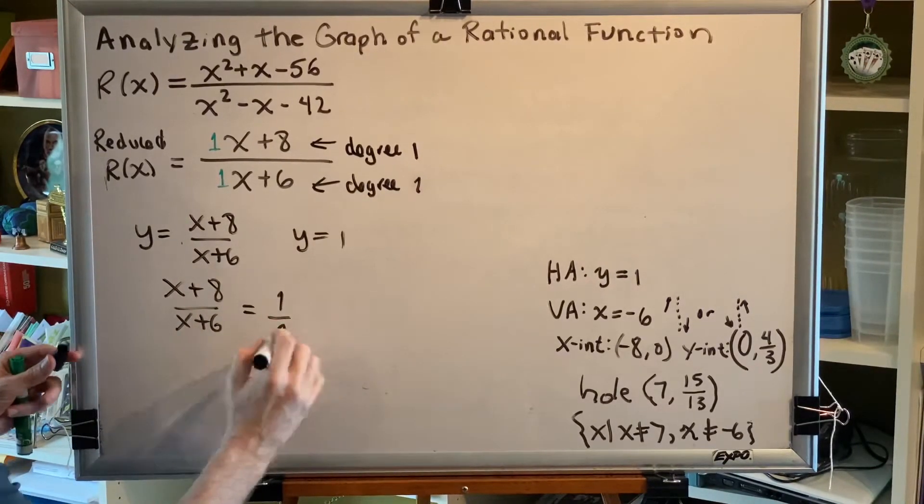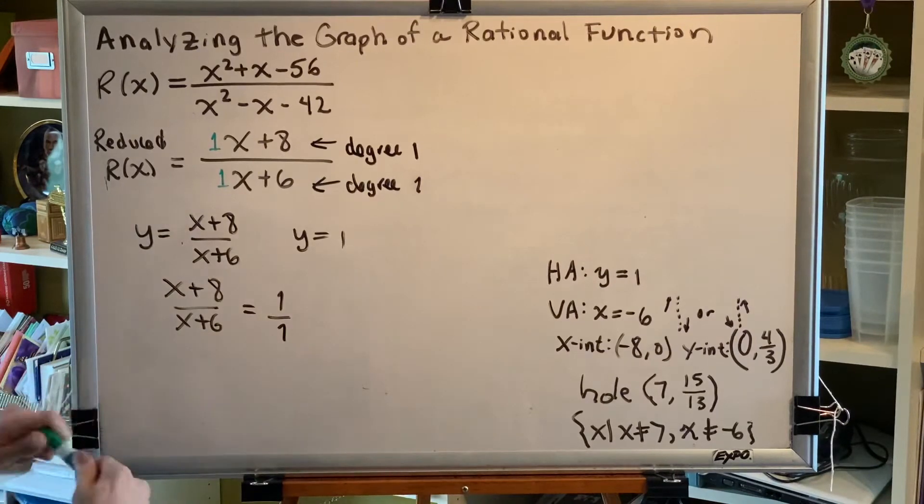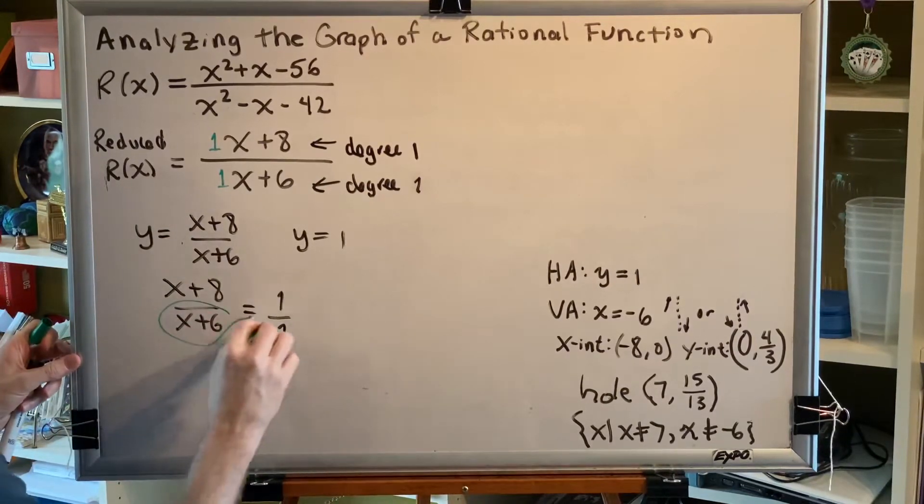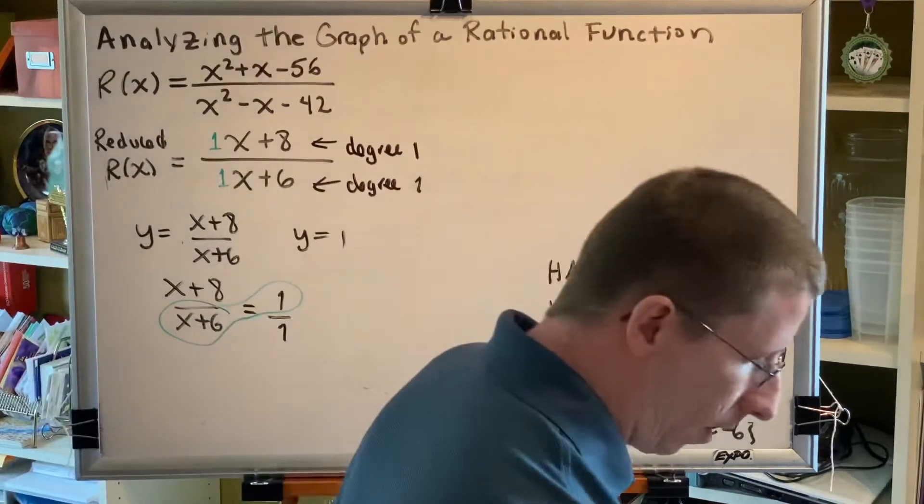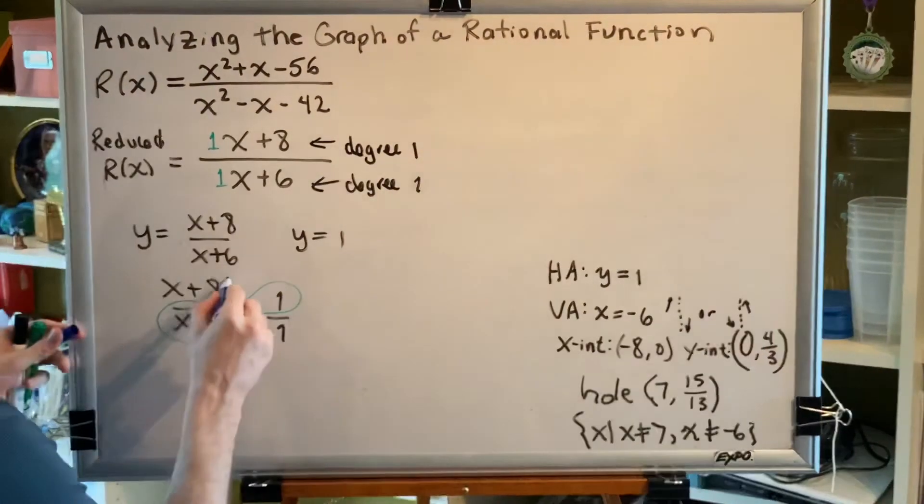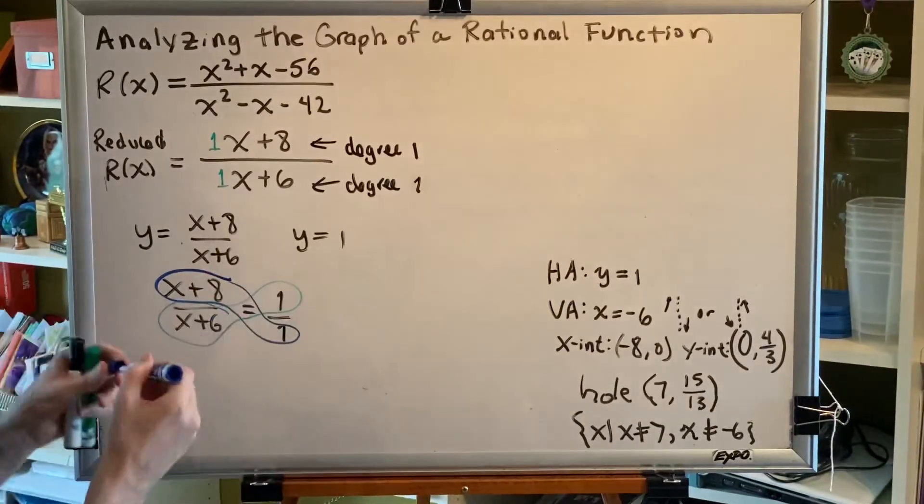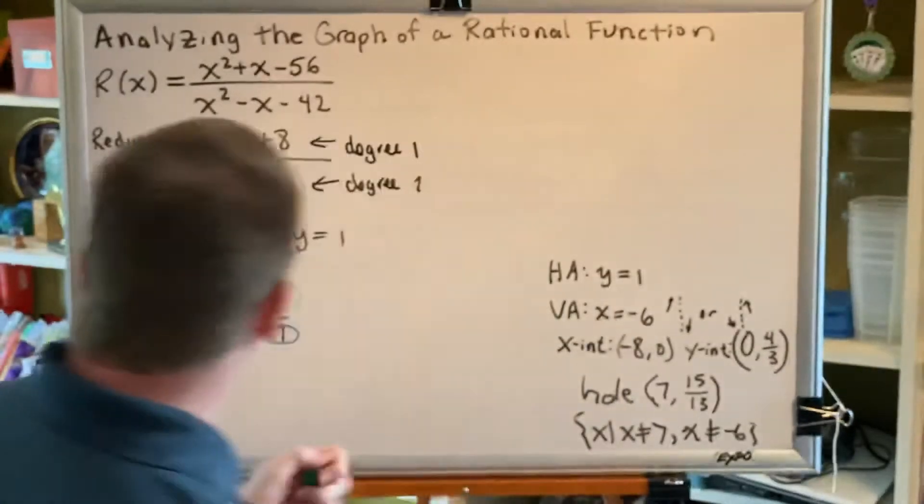Now 1 can be written as 1 over 1, and then we can set the cross multiples equal to each other. So the x plus 6 will be multiplied by the numerator 1. The x plus 8 will be multiplied by the denominator 1, and those two products will be equal to each other.